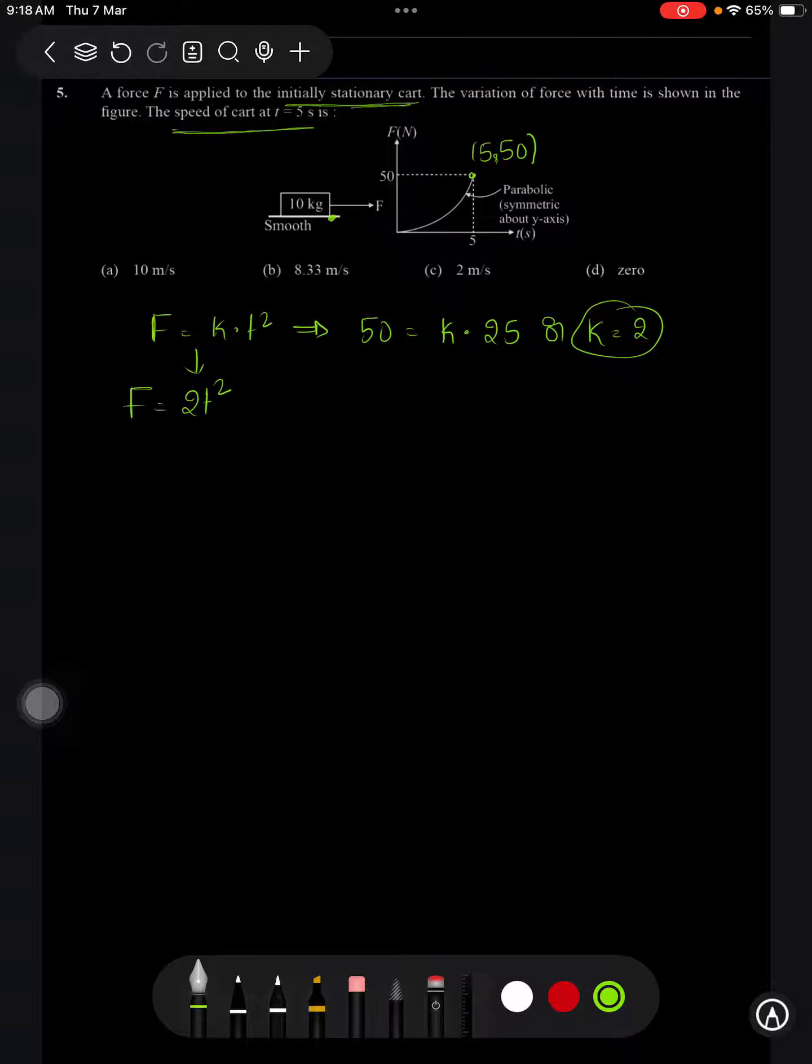And if I take this block and write the force equation on that block, I will be getting f equals ma. Where f is here 2t squared, mass is 10 kg, acceleration can be written as dv upon dt. This is 5 times. So I will be getting t squared dt equals 5 dv.